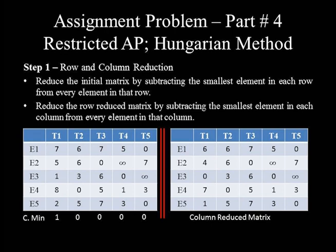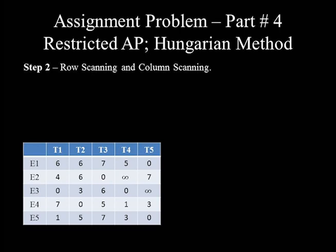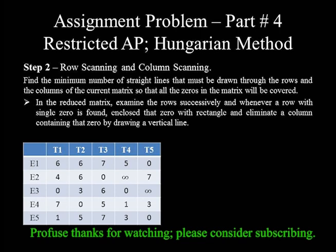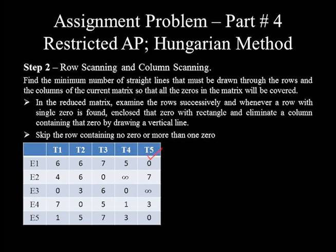Step 2: row scanning and column scanning. We will find the minimum number of straight lines drawn through the rows and columns so that all zeros in the matrix are covered. In row scanning, we examine rows successively; whenever a row with a single zero is found, we enclose that zero in a rectangle and eliminate the column containing that zero by drawing a vertical line through it. The only zero of row 1 is under column 5, so we enclose it and delete column 5. The only zero of row 2 is under column 3, so we enclose it and eliminate column 3. Row 3 contains two zeros, so we skip it. Row 4 has only one zero under column 2, so we enclose it and delete column 2.